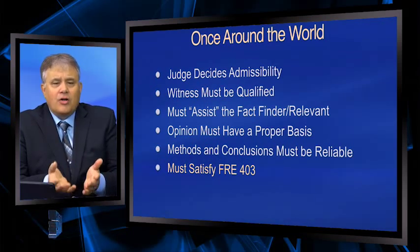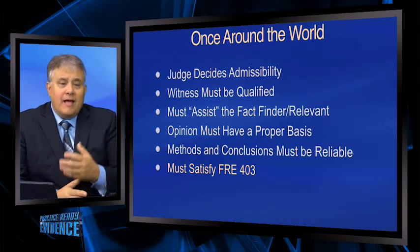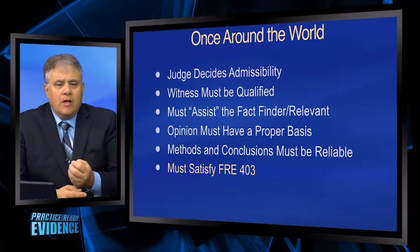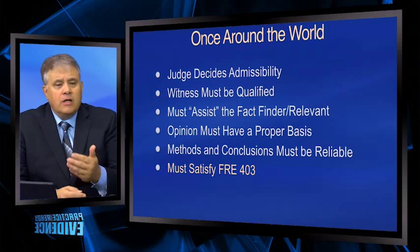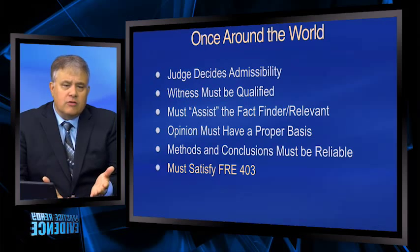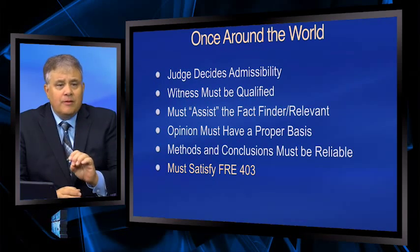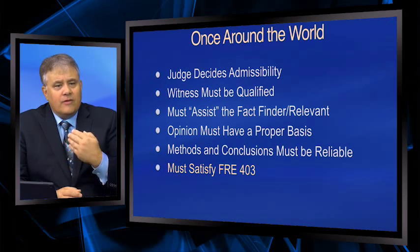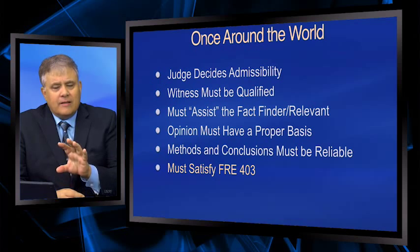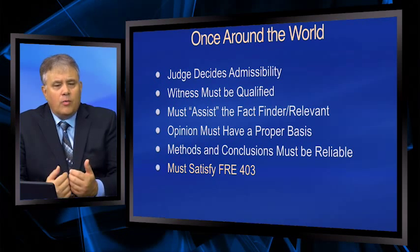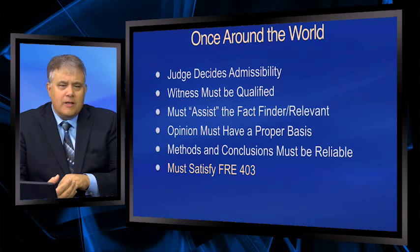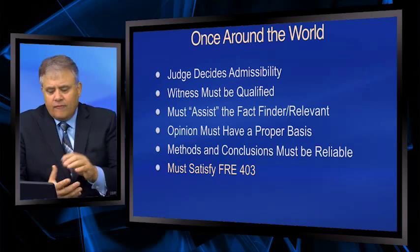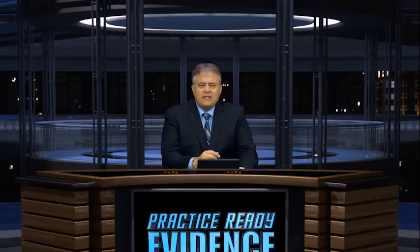At the end of the day, the testimony also has to satisfy Federal Rule of Evidence 403 — meaning the probative value must not be substantially outweighed by the danger of unfair prejudice, confusion of the issues, waste of time, or misleading the jury. That's the standard 403 balancing test — the catch-all provision in evidentiary law. New advocates often make the mistake of beginning with the 403 analysis when they should actually end with it after addressing the other evidentiary issues first.